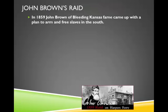In 1859, John Brown, of leading Kansas fame, came up with a plan to arm and free slaves in the South. He planned to raid the military arsenal at Harper's Ferry.